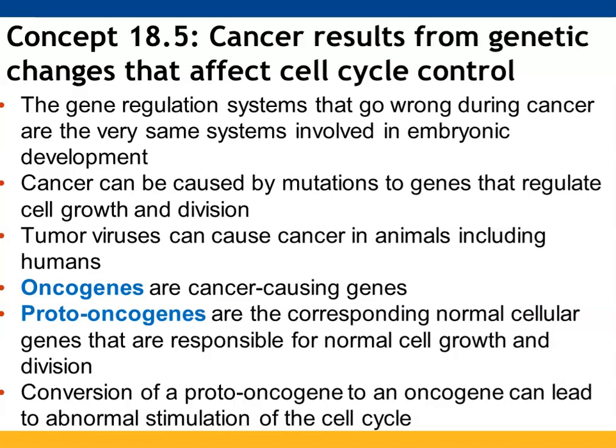The final section covers how cancer can result from genetic changes that impact control of the cell cycle. Gene regulation, when it is not working correctly, plays a key role in cancer growing. Cancer can be caused by genes involved with regulating cell growth and division. Oncogenes are your cancer-causing genes. Proto-oncogenes are normal cellular genes under control of gene expression for normal cell growth and division. When a proto-oncogene gets turned into an oncogene, the cell cycle can be stimulated to go through division more rapidly than intended. Ways that could happen include: a new promoter being added, causing the gene to be transcribed more readily; multiple copies being made; or a point mutation causing large amounts of that protein to be generated.